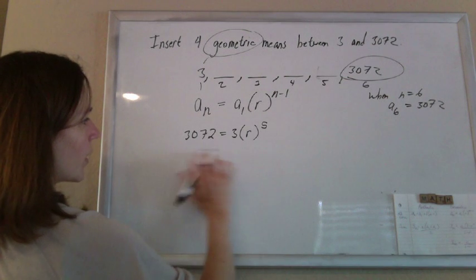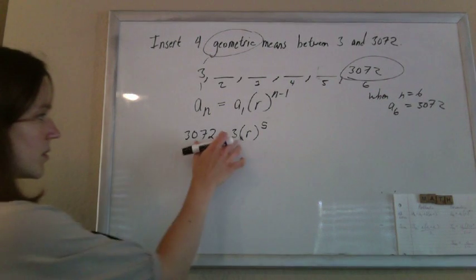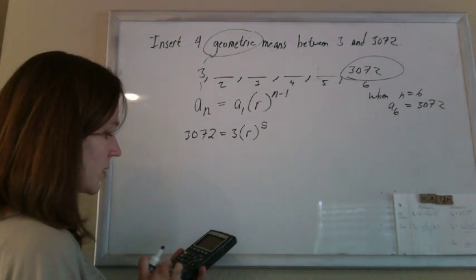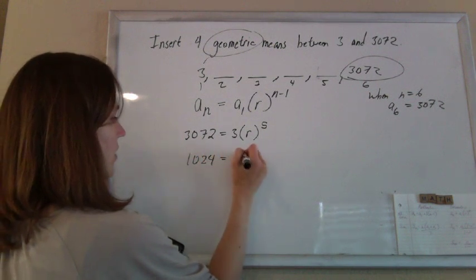Now we have one equation, just one unknown. We can solve this by dividing by 3 first. 3072 divided by 3 is 1024, which equals r to the fifth.